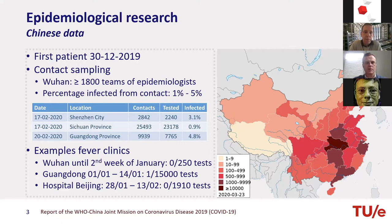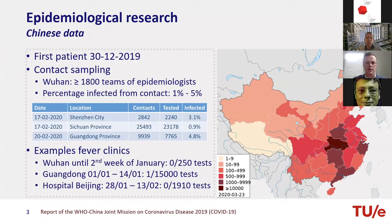They started sampling in a particular way, using 1,800 teams of epidemiologists of at least five people to hunt down all people that might be in contact with infected people. What they found is that the percentage of infected people was about one to five percent. The table shows how many contacts they tried to find, how many they were able to find and test, and the percentages that were actually contaminated with this new virus.